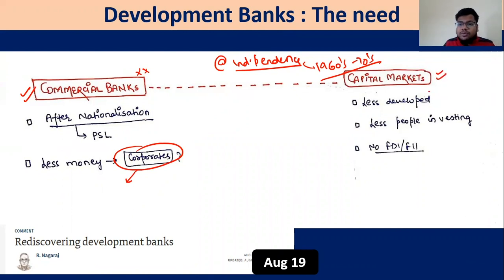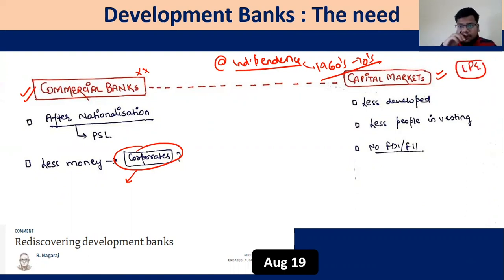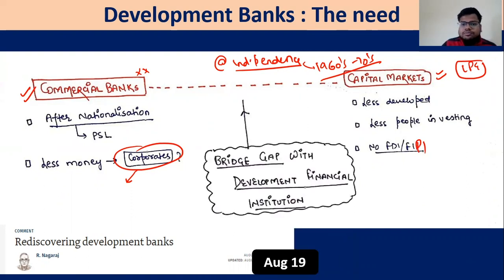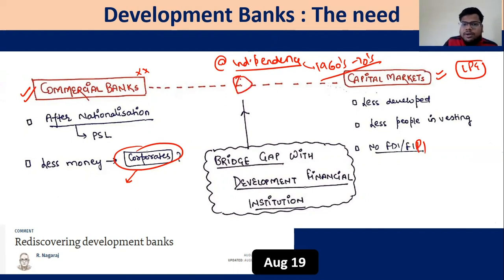What about capital markets — the stock exchange? Again, not a good option because capital markets were not developed at that time. They developed significantly only post-LPG reforms. There were less investors, no FDI, no FPI. These were the issues with corporates getting long-term funding for infrastructure creation, and that gap was bridged by the Development Financial Institutions.